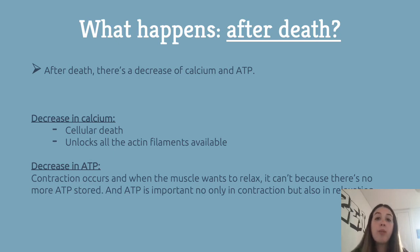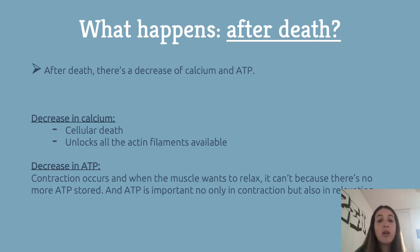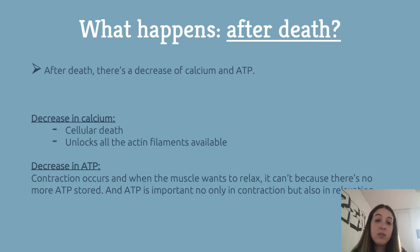After death, initially calcium is released in huge quantities, which determines cellular death and unlocks all the actin filaments, making them available for the myosin filaments to bind. Then there is a huge decrease in calcium and also a large decrease in ATP. The remaining ATP helps throughout this binding while simultaneously decreasing, so when the muscle wants to relax it can't, because there is no more ATP stored — and this nucleotide is very important not only to contraction but also to muscular relaxation.